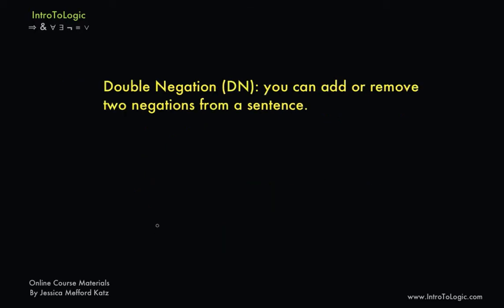Moving on to double negation, also represented by DN. Here we have another rule of inference. According to this rule, you can add or remove two negations from a sentence.